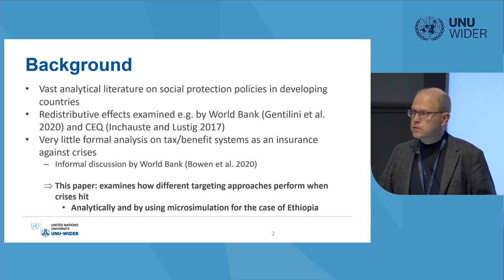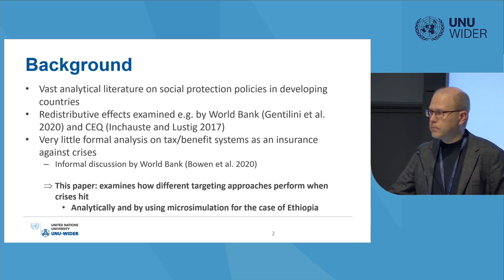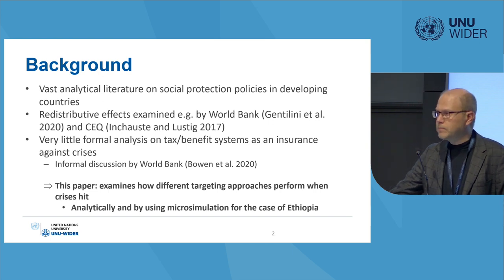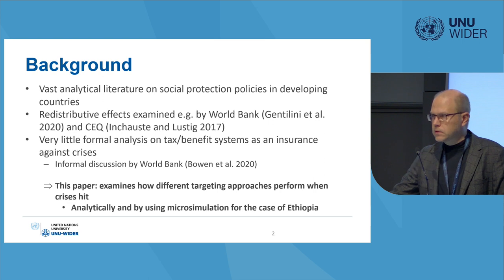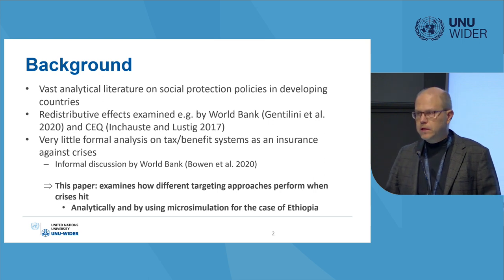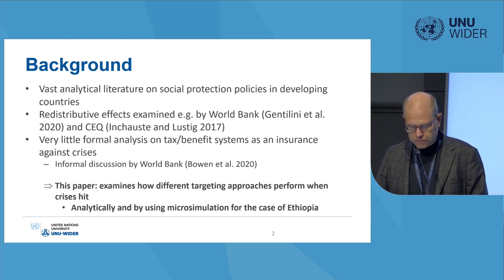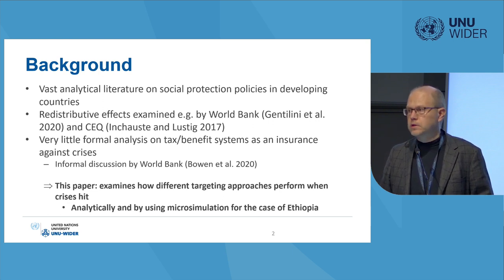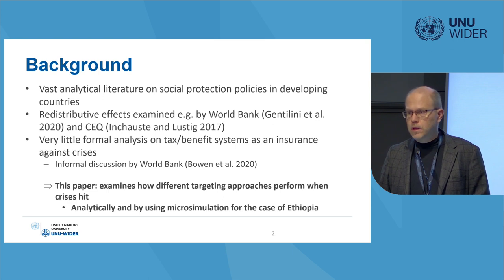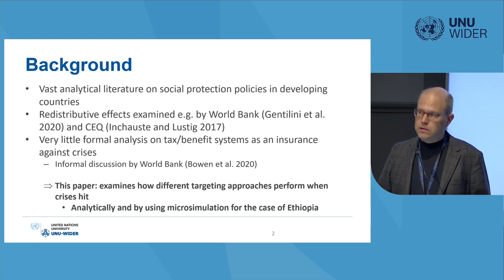There is very little formal analysis on how tax and benefit systems fare during crisis times when incomes change. There is some informal discussion by the World Bank, and a book from 2020 on so-called adaptive social protection policies, but it is pretty informal. What we try to do in this paper is analytically examine how different targeting approaches perform when people's incomes change.